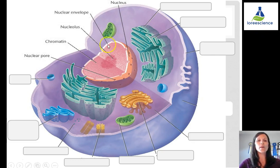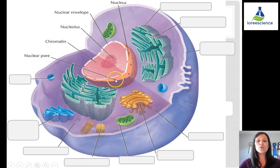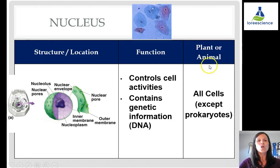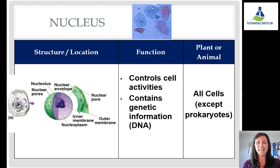Let's start with the nucleus area. We have the nucleus, the nuclear envelope which surrounds the boundary of the nucleus, the nucleolus — the dense part in the middle — the chromatin or genetic material, and nuclear pores so things can get in and out. The nucleus controls the cell's activities and contains all genetic information in the form of DNA, found in all cells except prokaryotes.